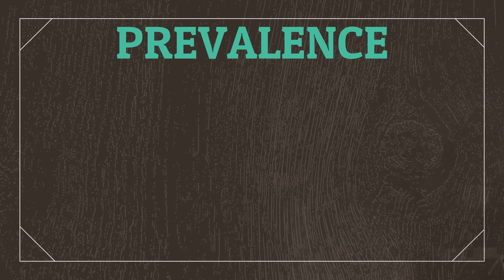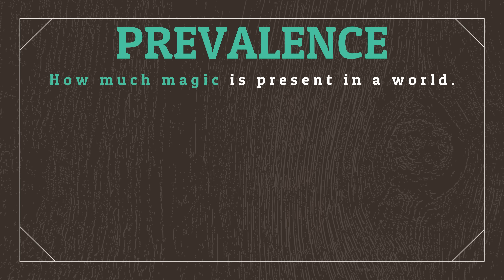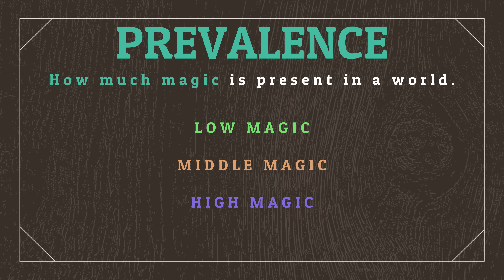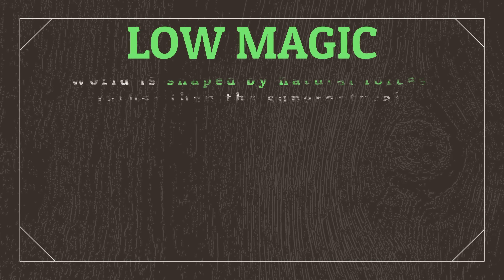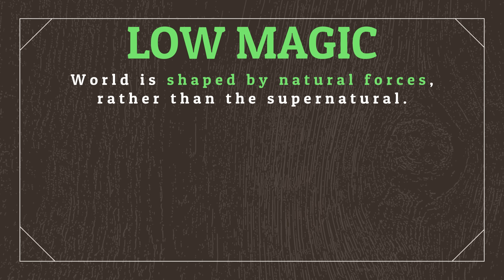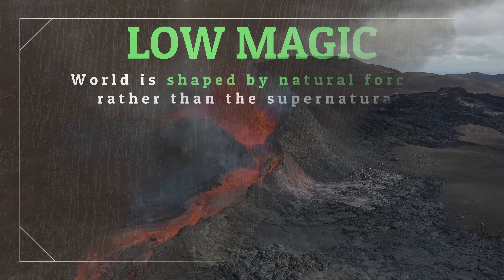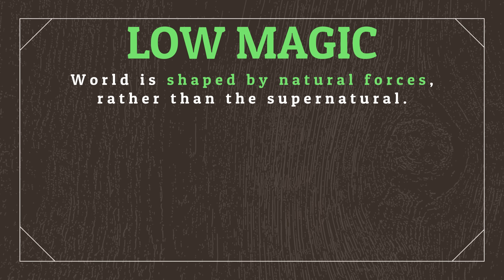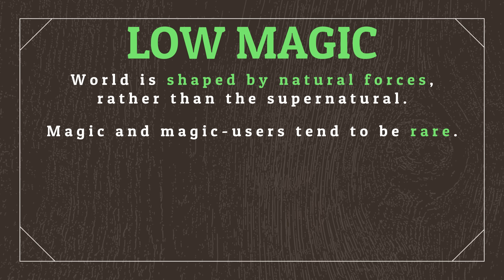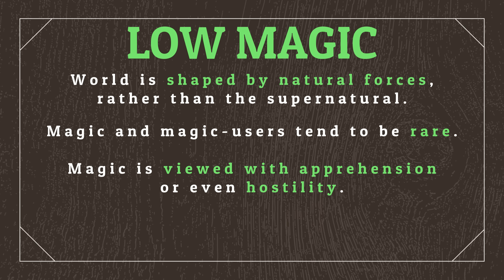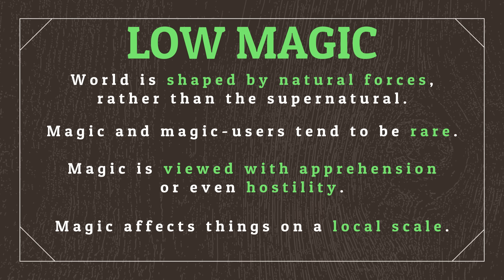Now that we've differentiated between hard and soft magic, the other important feature to determine is prevalence — how much magic is present in your world — separated into the categories of low magic, middle magic, and high magic. In low magic worlds, the supernatural tends to not play a huge role in shaping the world at large, with worlds designed using scientific forces like geology and climatology rather than something supernatural like a deity. Once low magic worlds reach the point of designing cultures, magic and magic users tend to be rare, often viewed with apprehension or even hostility, with powers that usually only influence things locally.